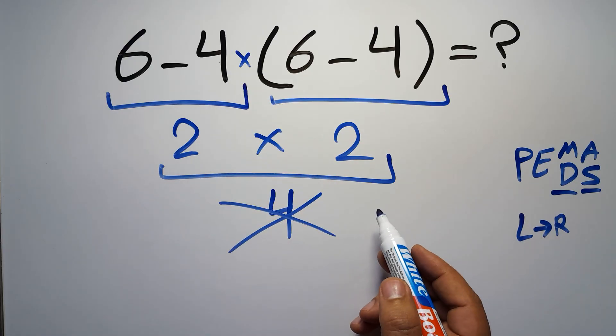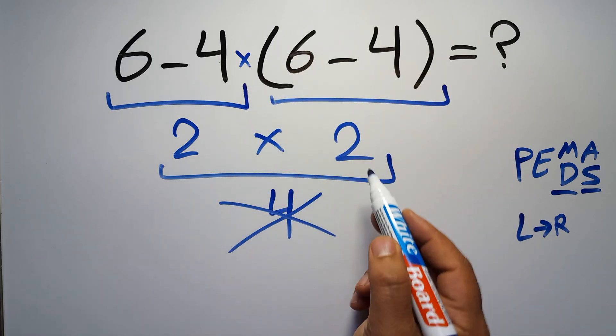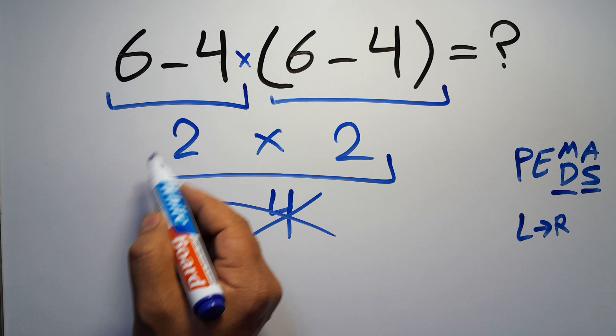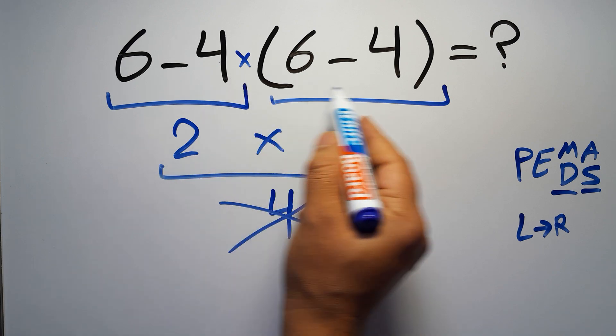So according to the PEMDAS, first we have to do this parentheses, then this multiplication, and finally this subtraction. If we do this subtraction before this multiplication or this parentheses, it is wrong.